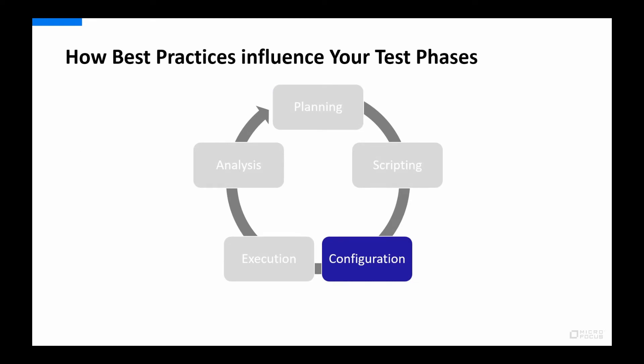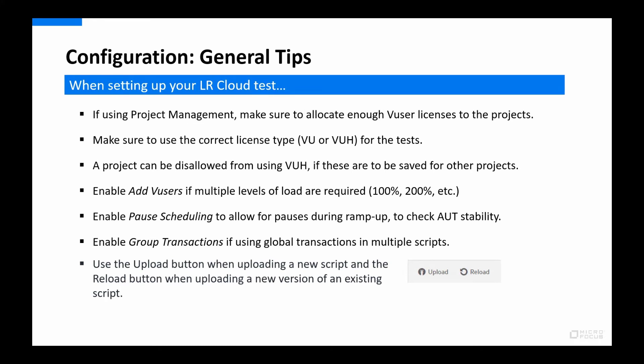Moving on to configuration. If you have project management enabled in LoadRunner Cloud, make sure not only that enough licenses are allocated, but also that the correct type of license — either virtual user or virtual user hours — is assigned to the different projects. You can also disallow certain projects from using virtual user hours licenses if those are reserved for specific projects, so they aren't used up by mistake when a standard virtual user license could have been used.